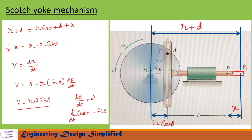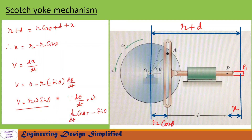To find velocity of point P on this slider, let us differentiate the displacement equation with respect to time. So v = dx/dt. Differentiation of r with respect to time is zero since r is constant, and differentiation of −r·cosθ becomes +r·sinθ · (dθ/dt). Since dθ/dt is omega, this equation finally becomes v = r·ω·sinθ. This is the equation to find the velocity of point P on this slider.